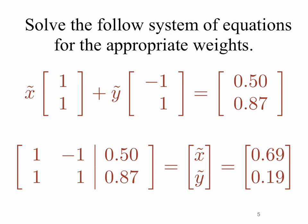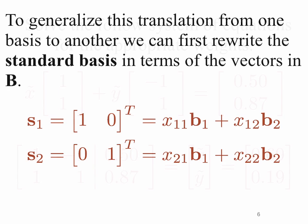What we'd like to do is figure out how we might generalize that. To generalize this translation from one basis to another, we can first rewrite the standard basis in terms of the vectors in b. The standard basis has the vector (1,0) in the positive x direction, and (0,1) in the positive y direction, and all vectors in R2 can be written as a linear combination of those two. So S1, which is i-hat, is some scalar times b1 plus some scalar times b2.